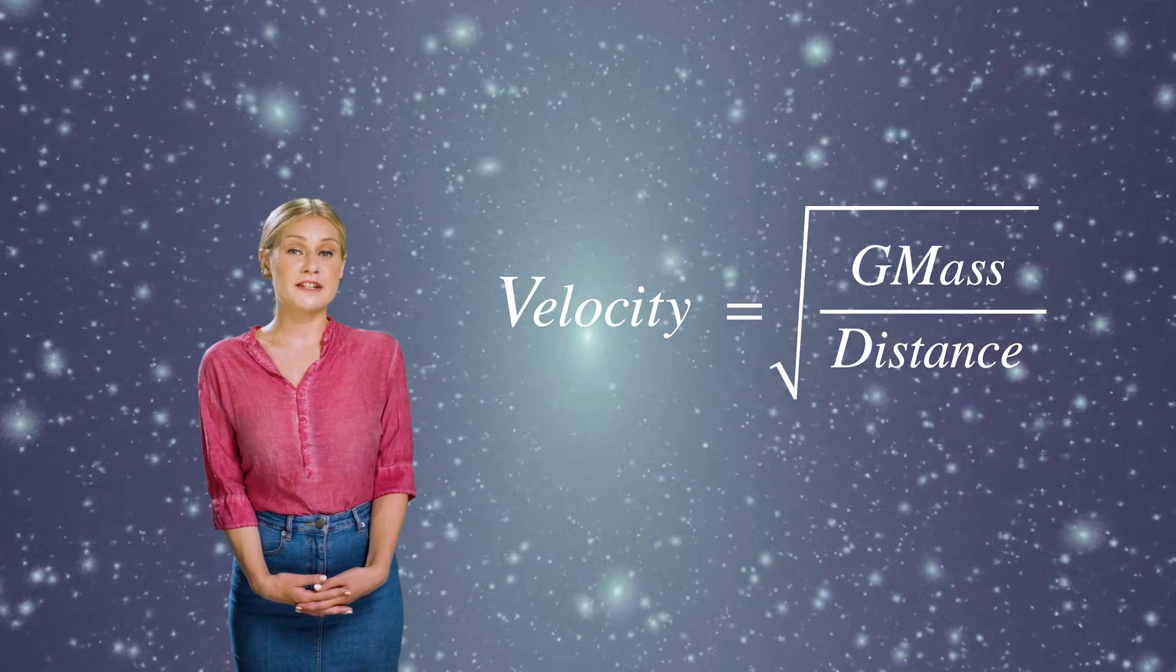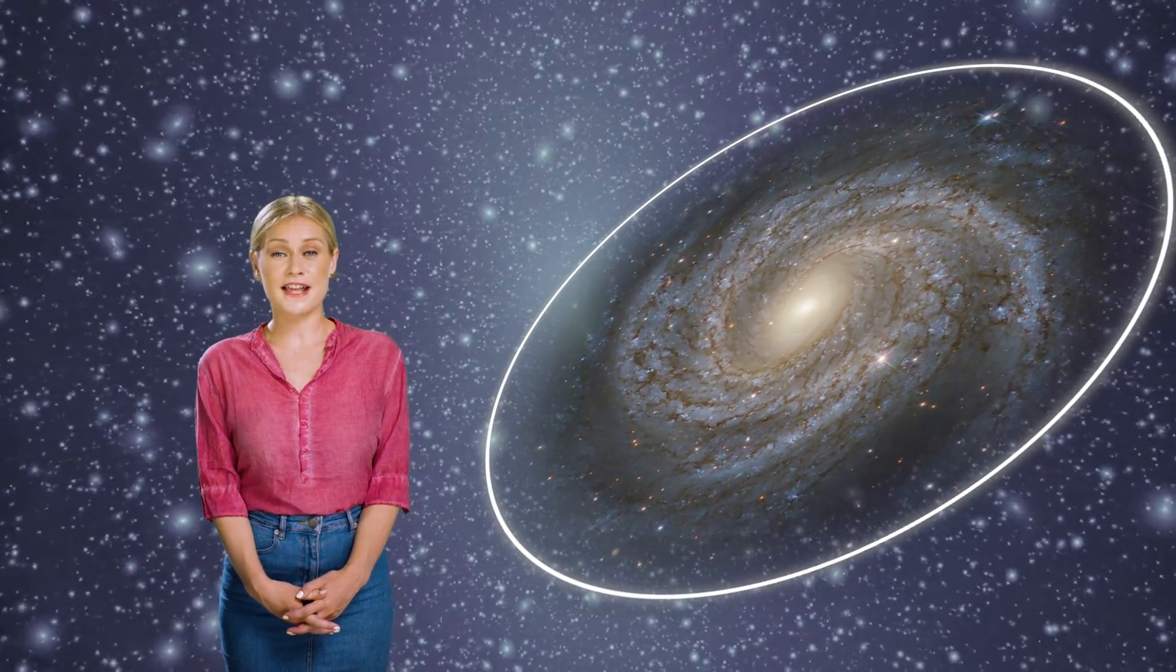This is exactly what we find for the solar system. When we do the same analysis on spiral galaxies, we don't see the same trend. The stars and gas are rotating a lot faster than they should be based on the amount of matter we can see in the galaxy.